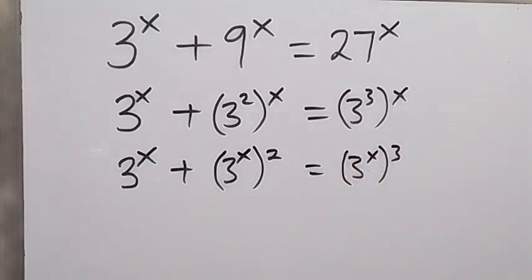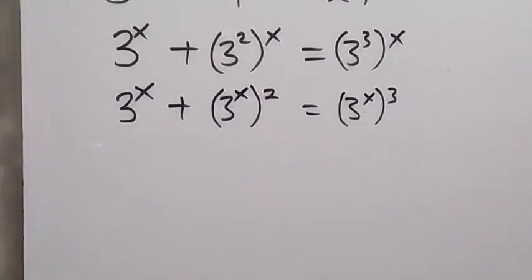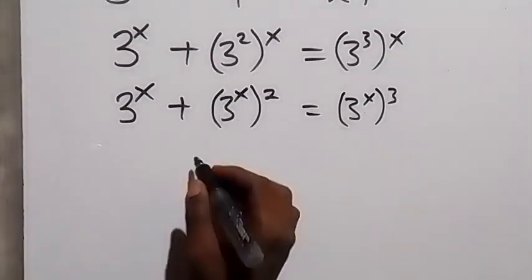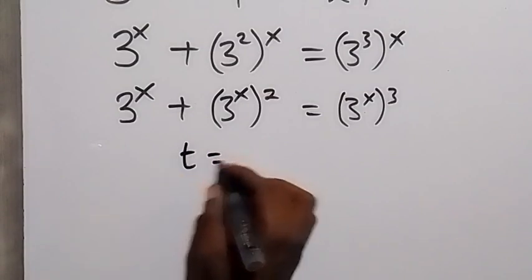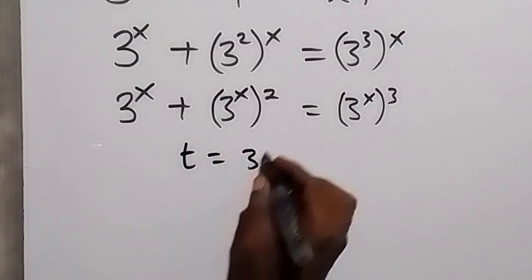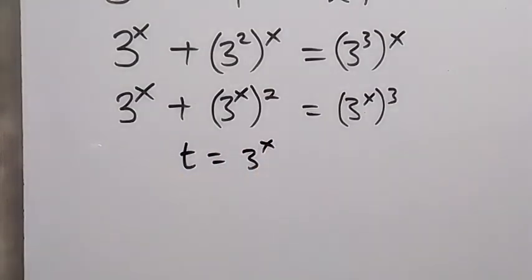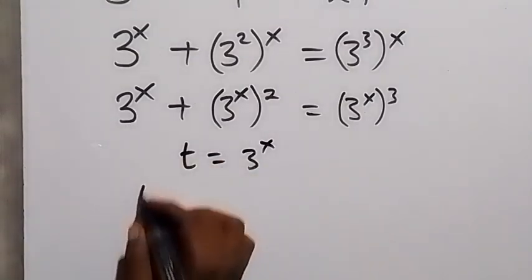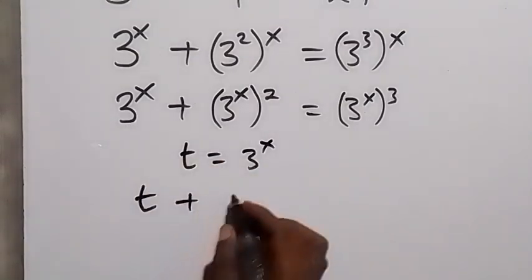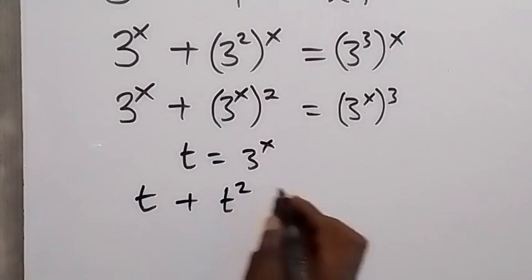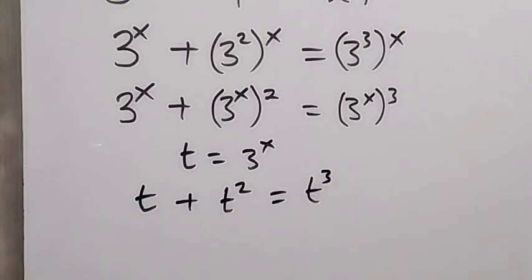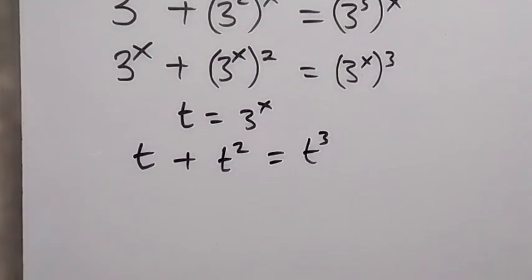Now in the next step we can use a letter to represent 3 raised to power x because it is common here. Let t equals 3 raised to power x. Then we can rewrite this equation and this will become t plus t squared equals t cubed.